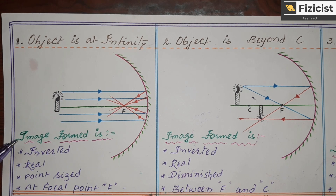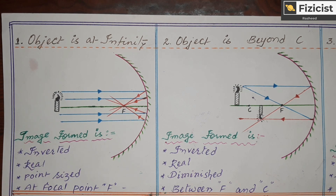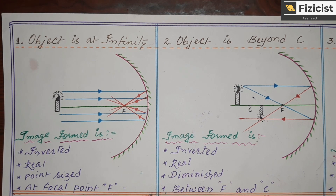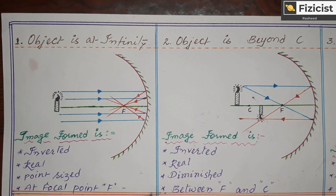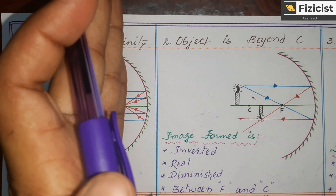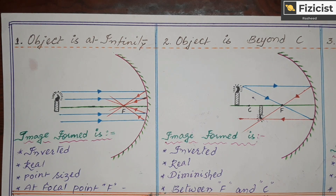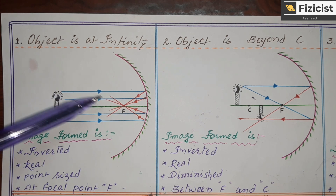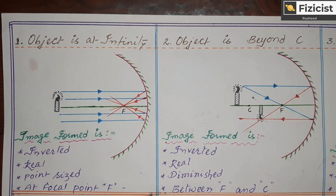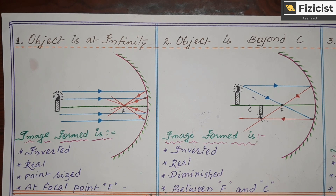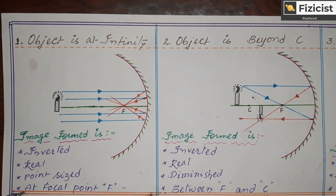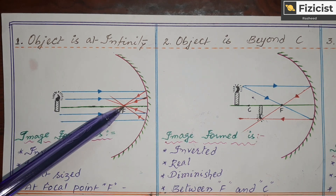The characteristics of the image formed are: first, it is inverted — upside down. Second, it is real — we can fix a photographic plate and save the image. Third, it is of point size, meaning it is extremely small. And fourth, the image is formed at the focal point.